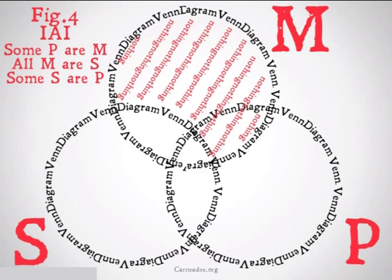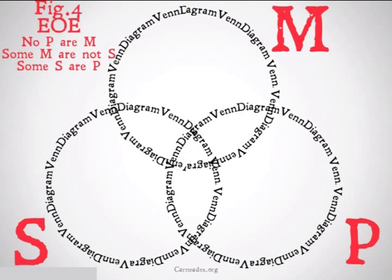Then we're going to do our particular premise, some P are M. We're going to put that X in the very center, because we can't put it in the side that's only shared by M and P, because we've already shaded that in. Therefore, we're going to see our conclusion, some S are P is going to just appear, because that X is in the very center. In fact, that X represents something that is S, M, and P. So it's going to be a valid argument.